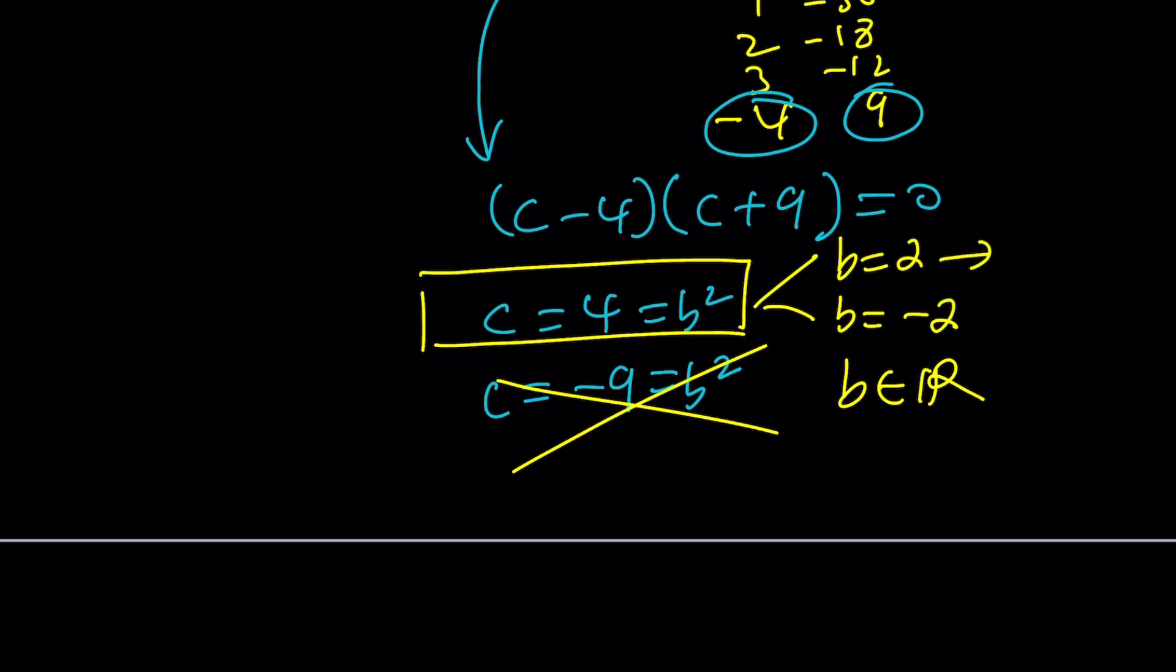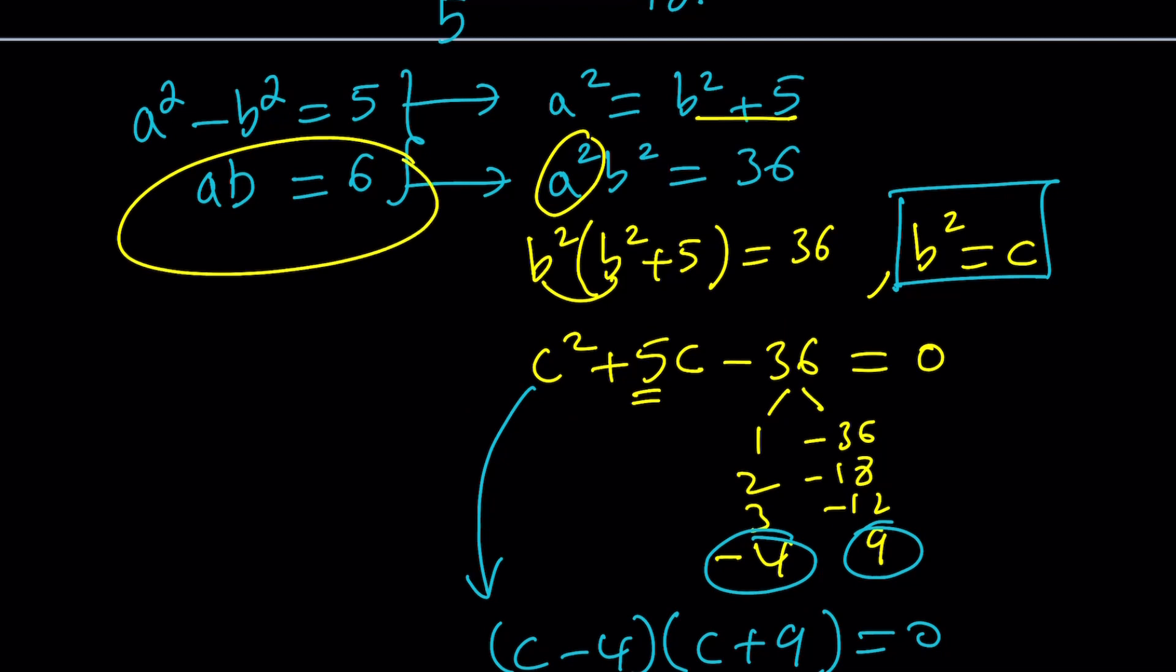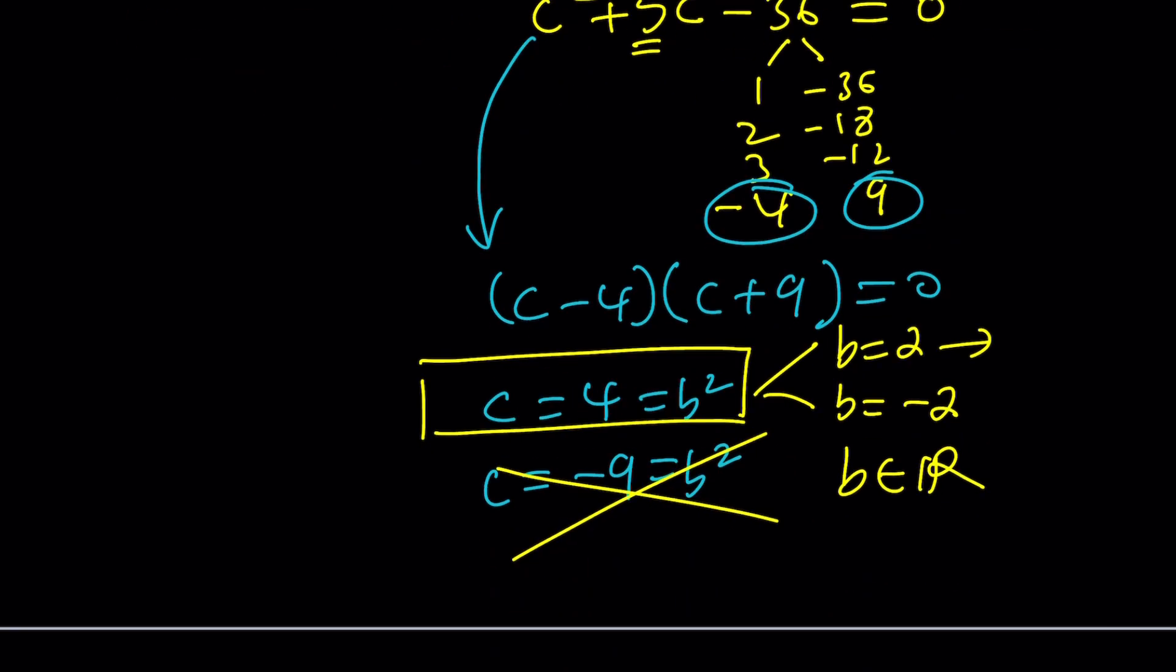But if b is 2, since their product is 6, ab is equal to 6. If b is equal to 2, then a becomes 3. And if b is negative 2, then a will be negative 3. And these ordered pairs give us the solution.